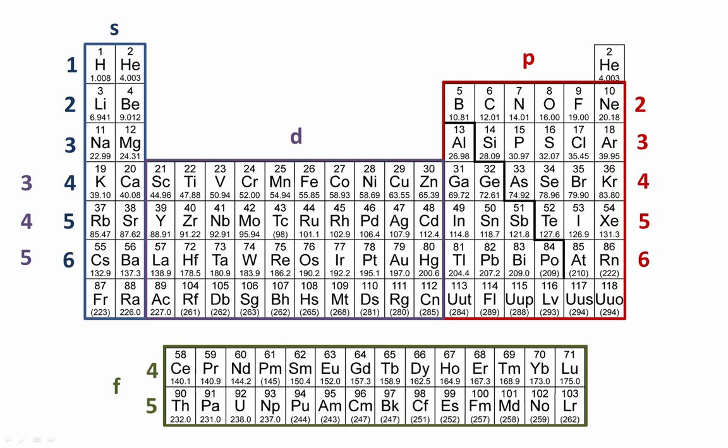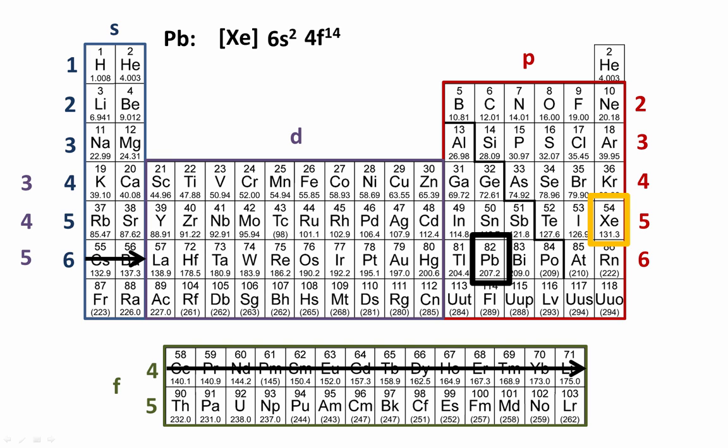Now we can find our electron configuration for Lead, and then we'll adjust it to create Lead-4+. We'll write the shorthand electron configuration. The noble gas that precedes Lead is xenon. Then we're filling our s-block with cesium and barium — that's 6s2. Then we move through our f-block: 4f14. And then to get to mercury, that's our d-block: 5d10. And we have two additional electrons in the 6p subshell.